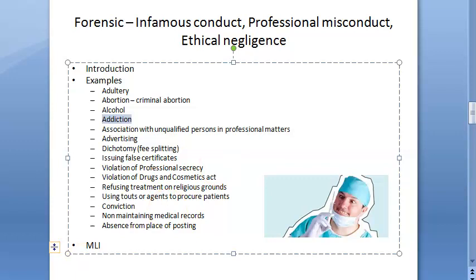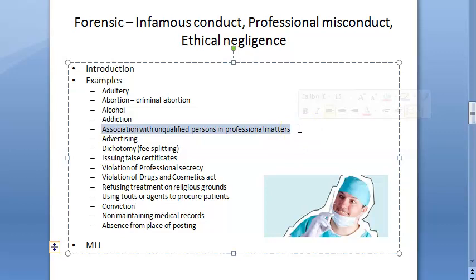The fifth A is association — association with unqualified persons in professional matters. This means having professional dealings with someone who has no medical qualification. This also includes issuing a certificate of efficiency in modern medicine to unqualified people, which is also considered wrong.